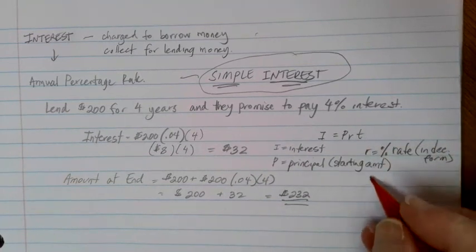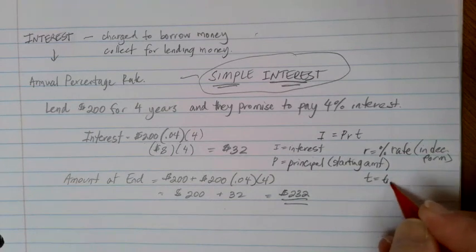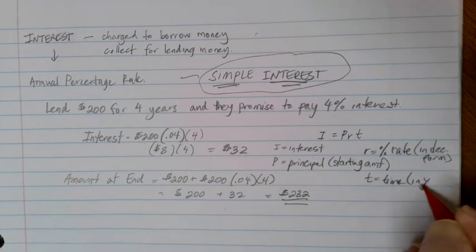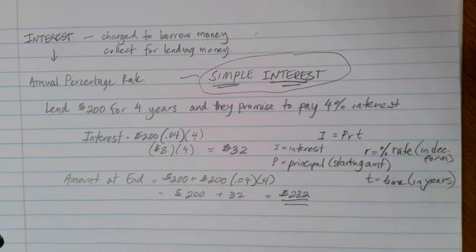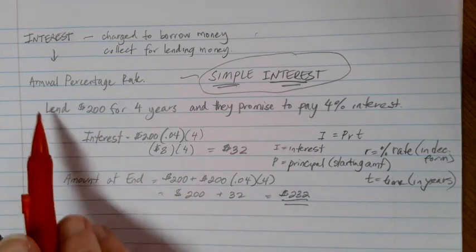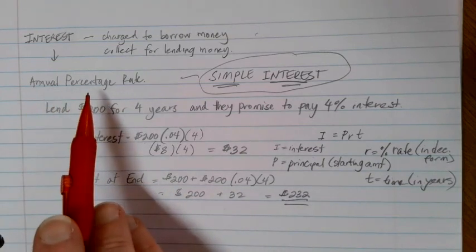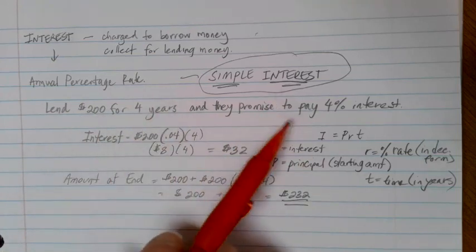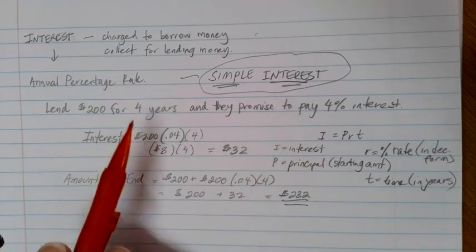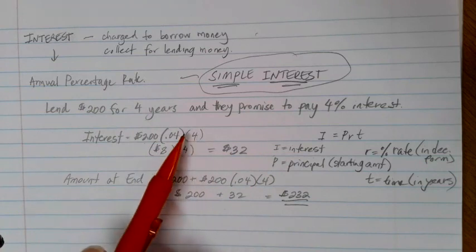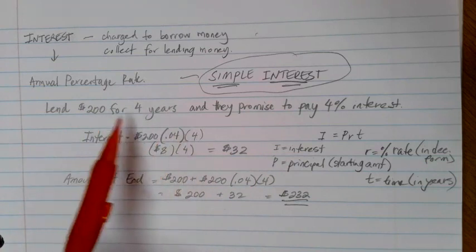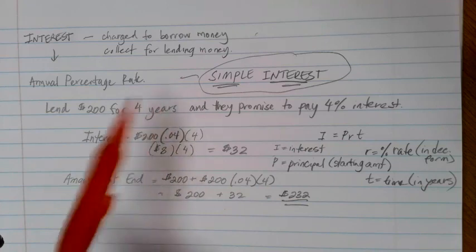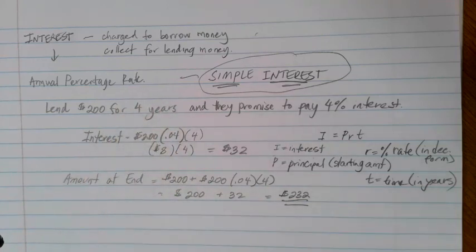The last variable there is T, and T is going to represent the time. And it's really important here that that time is always given in years because our interest rates will be given to us as annual percentage rates. So if, for example, we did this loan and they were going to pay it back after six months, you would have to put 0.5 in for T because that time needs to be in years, not in months to match my interest rate.